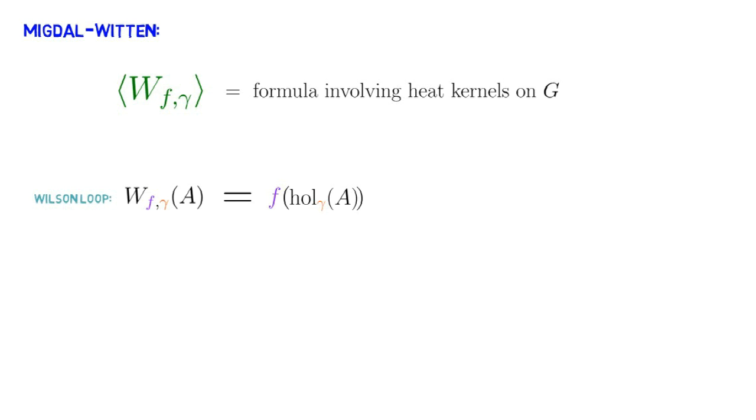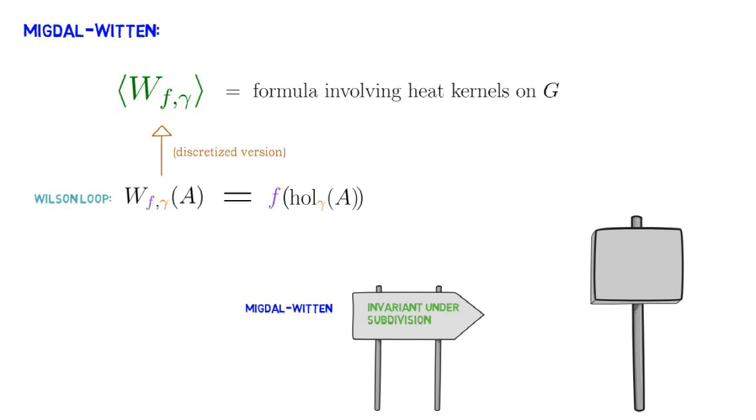The lattice expectation uses a discretized version of such a Wilson loop observable. What makes the Migdal-Witten lattice formulation soluble is that the theory is invariant under subdivision of the lattice, so that the continuum limit is essentially already performed on any finite lattice. This is not the case with the Wilson action, typically used in higher dimensions.